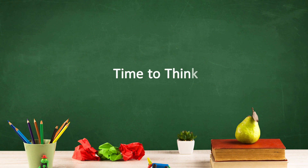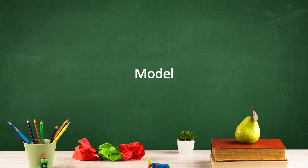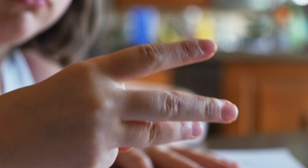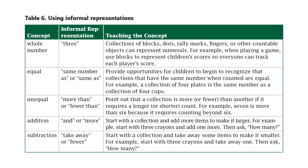Children as young as preschoolers can learn to talk about the many strategies they invent. We've got to give them time to think, use self-talk when necessary, and then model. For example, some children might know three plus two by counting three, then two, then five, whereas others might put up three fingers and two fingers and then recognize five. The practice guide provides some examples of how to teach informal representations of math concepts.